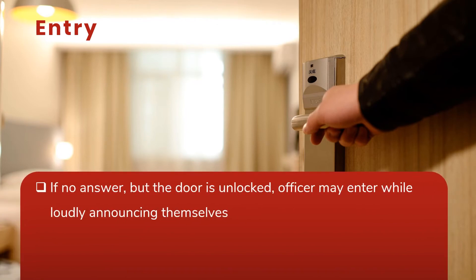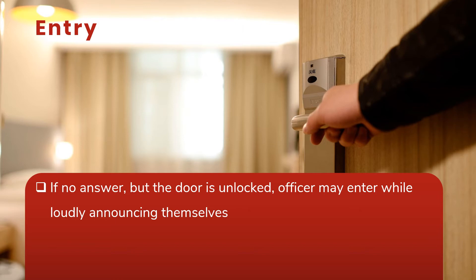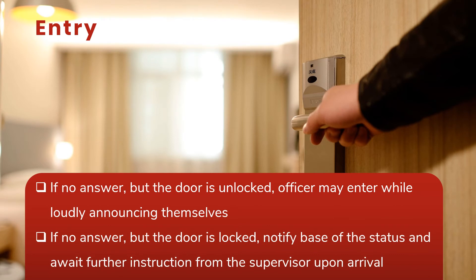If there is no answer but the door is unlocked, officers may enter while loudly announcing themselves. The procedure for entering a location under these circumstances will vary depending on the factors present and employer policy, but an unlocked door with a request for aid originating from that location typically confers permission to enter. If there is no answer and the door is locked, the officer should notify base of the status and await further instruction from the supervisor upon arrival, as forced entry is typically not authorized. This may include retrieving a spare dorm key.